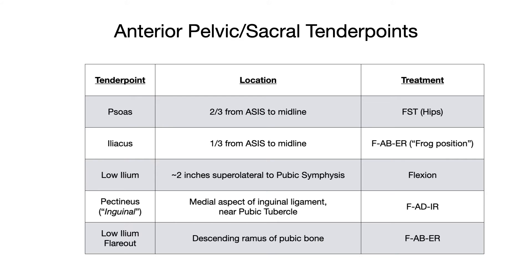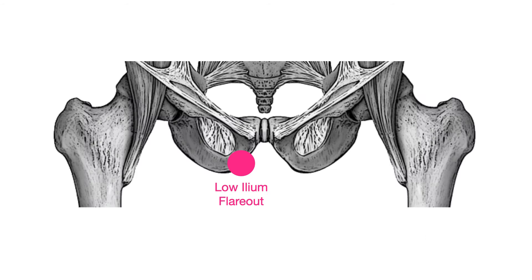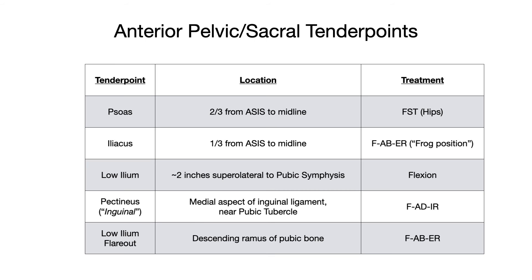Low ilium flare-out is treated with flexion, abduction, and external rotation — the same positioning as the iliacus. On the diagram, the low ilium flare-out, shown in pink, is located on that descending ramus of the pubic bone. This is below where the low ilium is located, so flare-out is lower than the low ilium. That's it for the anterior pelvic and sacral tender points.